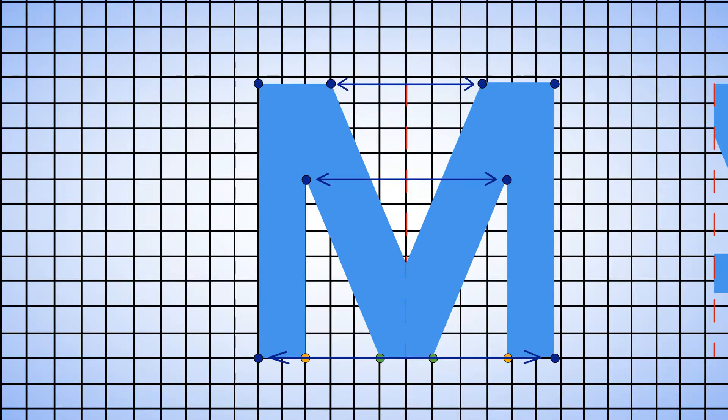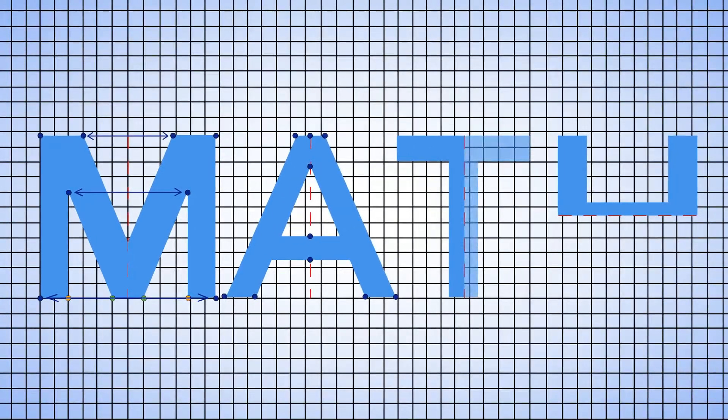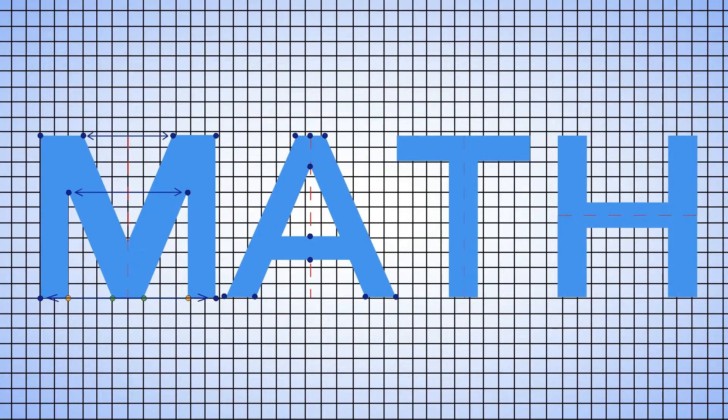We can do the same thing for the other shapes. Let's find the corners and place one the same distance from the line on the other side. And look! We've made the letters A, T, and H. And that spells out mighty math! Cool!